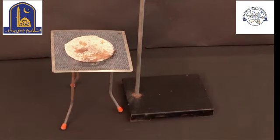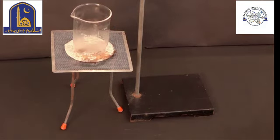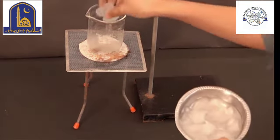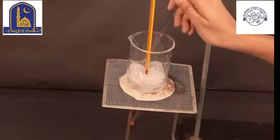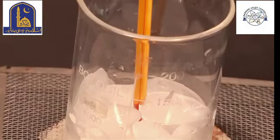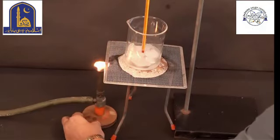Procedure: We have taken a few pieces of ice in a glass beaker. Keep the beaker on the tripod stand. Attach a thermometer to the stand so that the thermometer bulb will completely dip in the ice.